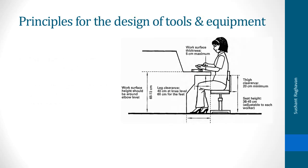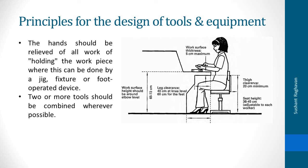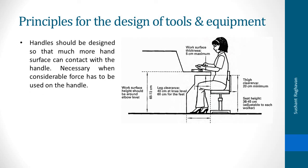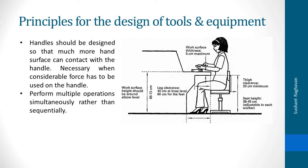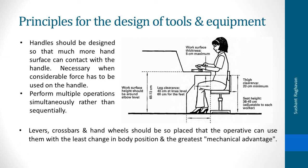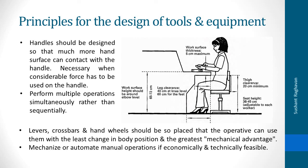Principles for the design of tools and equipment: the hands should be relieved of all work of holding the workpiece where this can be done by a jig, fixture or foot operated device. Two or more tools should be combined wherever possible. Where each finger performs some specific movement as in typewriting, the load should be distributed in accordance with the inherent capacities of the fingers. Handles should be designed so that much more hand surface can contact with the handle, especially when considerable force has to be used. Perform multiple operations simultaneously rather than sequentially. Levers, crossbars and hand wheels should be placed so the operative can use them with the least change in body position and the greatest mechanical advantage. Mechanize or automate manual operations if economically and technically feasible.